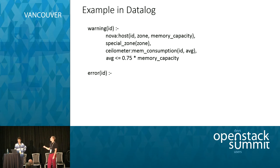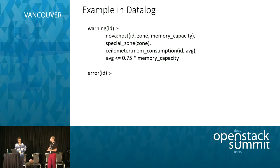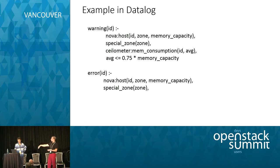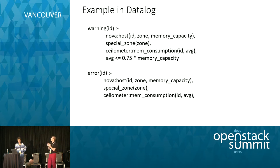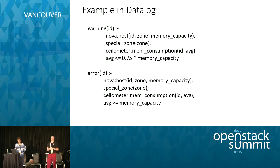The second constraint in English was that the memory utilization can't be more than the capacity. Here we use the keyword 'error' — this means it's a hard constraint. The first three conditions are exactly the same as above. The only difference is that the last statement checks that the average is greater than the memory capacity — because we're writing the conditions under which there are warnings and errors, not saying what must actually happen.